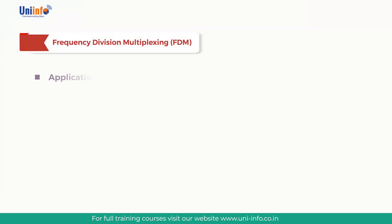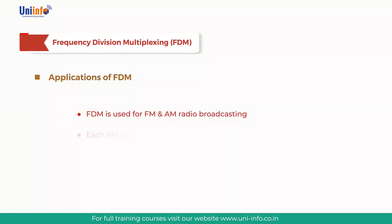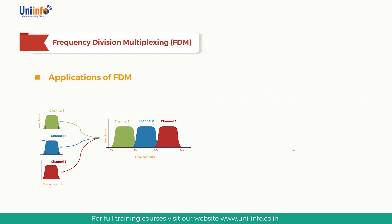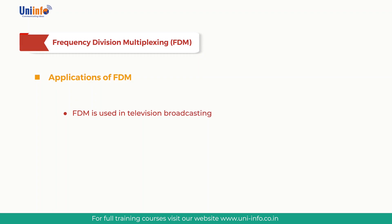FDM is used for FM and AM radio broadcasting. Each AM and FM radio station uses a different carrier frequency. In AM broadcasting, these frequencies use a special band from 530 to 1700 kHz. All these signals are multiplexed and transmitted in air; a receiver receives all these signals but tunes only the one required. Similarly, FM broadcasting uses a bandwidth of 88 to 108 MHz. FDM is also used in television broadcasting and first-generation cellular telephones.